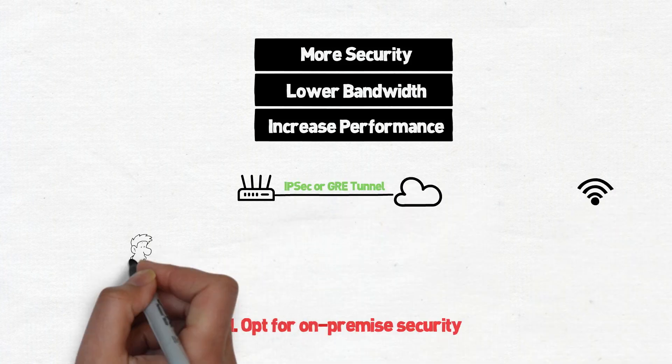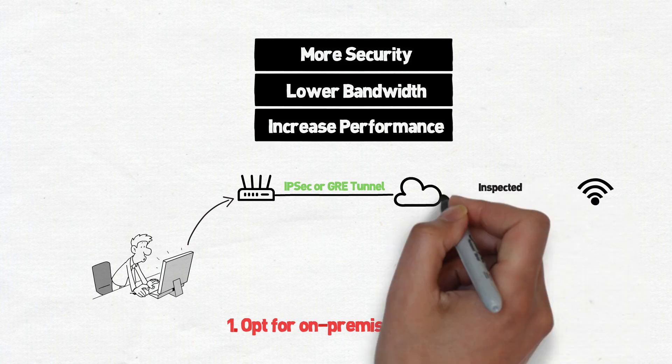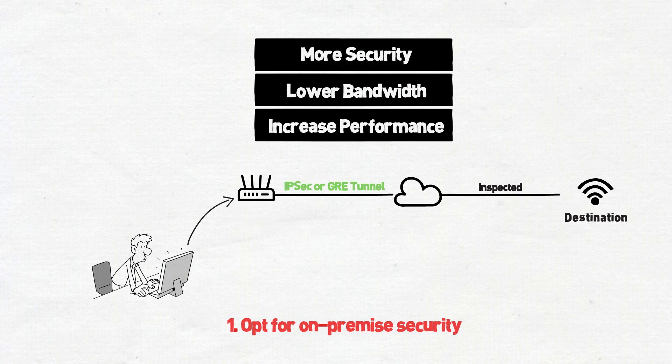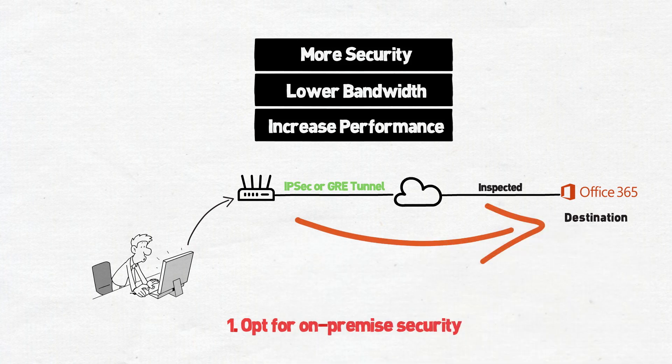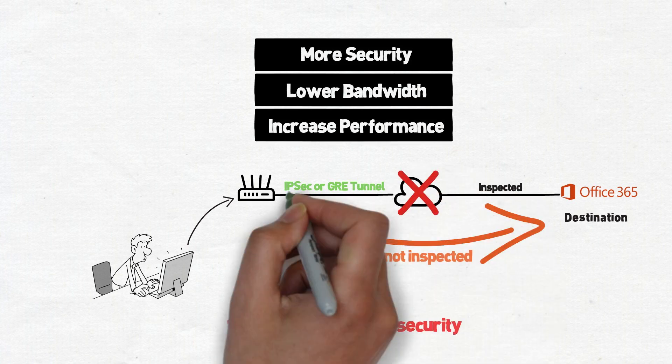For cloud inspection to work properly, all branch internet traffic must be forwarded to the cloud through a GRE or an IPsec tunnel. That means that regular user traffic needs to be forwarded to the nearest cloud data center, inspected, and then forwarded off to the destination. That means that if you have an SD-WAN rule to route an application like Office 365 directly out to the internet without going through the cloud inspection first, it bypasses security altogether.